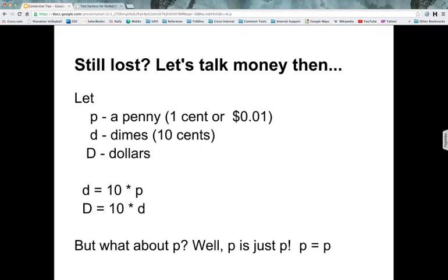And then d is dimes, which is ten cents or ten pennies, and capital D is dollars, right? So there are ten dimes in one dollar and ten pennies in a dime. And what about p? Well, like I said, p is just p, right? Because it's the smallest unit that we're going to go.